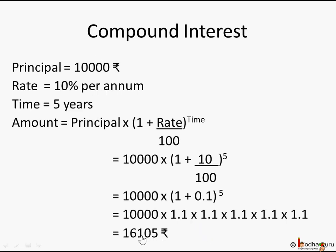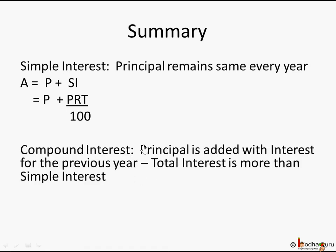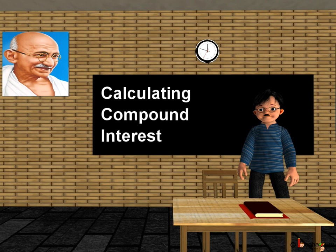In a nutshell: for simple interest, the principal remains the same every year and the formula is Amount equals Principal plus SI, where SI equals PRT by 100. In compound interest, the principal is added with the interest for the previous year, hence the total interest is more than simple interest for the same rate, duration, and principal. The formula for compound interest amount is P into (1 plus R by 100) to the power T. That's all for this lesson, bye bye.